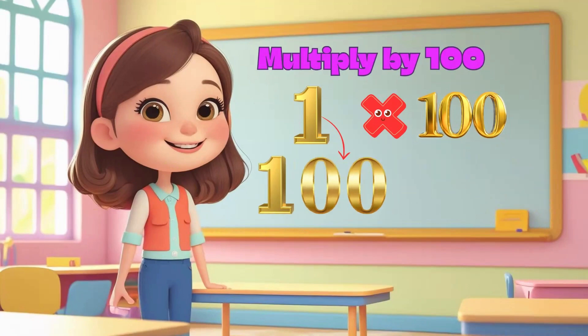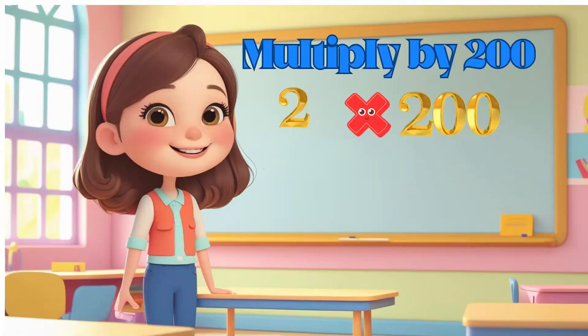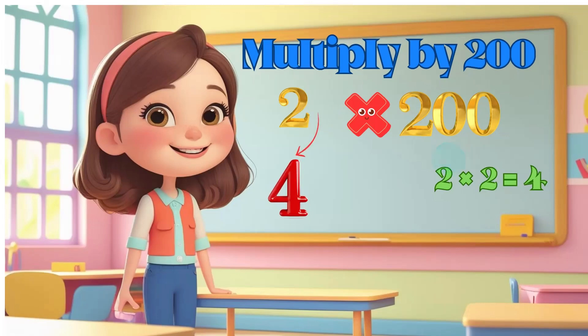Now multiplying by 200: first, multiply your number by 2, then add two zeros. Example: 2 multiplied by 200 equals — 2 times 2 is equal to 4, add two zeros equals 400.